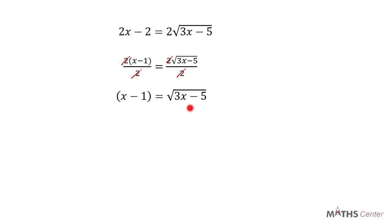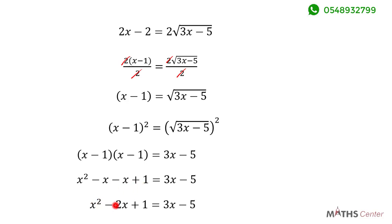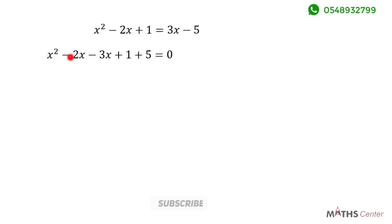We still have the square root, so I will square both sides to get rid of it. We have x minus 1 squared equal to square root of 3x minus 5 squared. Expanding x minus 1 squared: x times x is x squared; x times negative 1 is negative x; negative 1 times x is negative x; and negative 1 times negative 1 is positive 1. This gives x squared minus 2x plus 1 equals 3x minus 5. Sending 3x and negative 5 to the left: x squared minus 5x plus 6 equals 0.